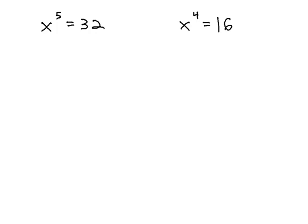This first example, x to the fifth equals 32, we're going to try and solve for x. And because we have an odd exponent, this is what we call the odd root property.